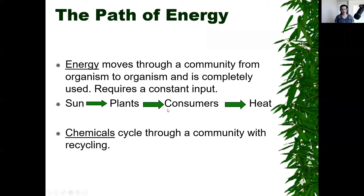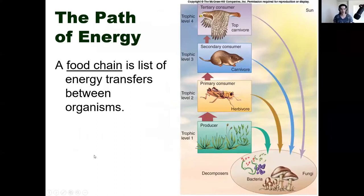However, chemicals — the carbon, the nitrogen, the oxygen — will cycle through the community and become recycled. Energy is lost; it is absorbed from the sun, consumed, and transferred. Eventually those carnivores will die and the energy is gone. But their chemicals remain and are recycled through the environment — kind of like Lion King, where everything becomes part of the cycle.